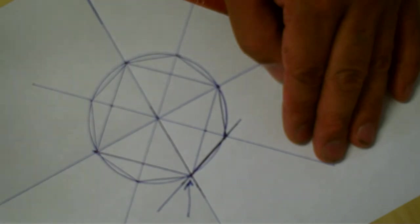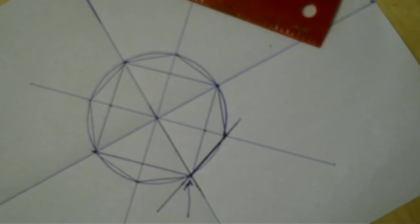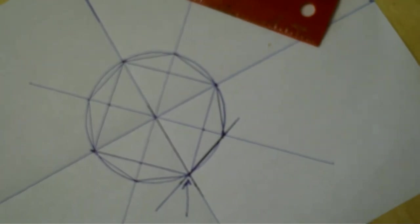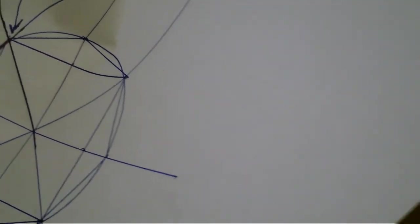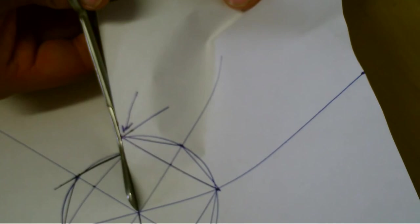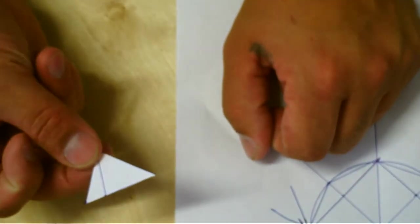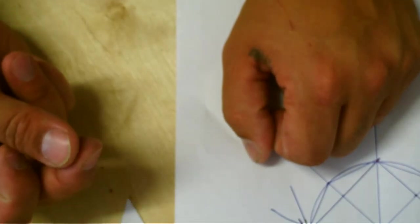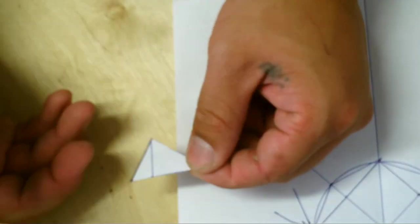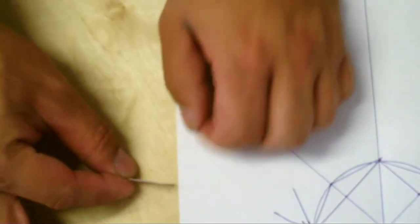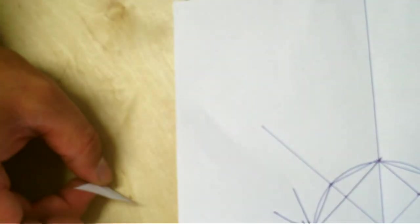So you can actually cut that out. I'll grab my scissors. Just cutting out a piece of the pie. You can take this and line this up to whatever saw you're using. It doesn't really matter. And you can get that angle just by putting it on there and adjusting your saw to that angle.